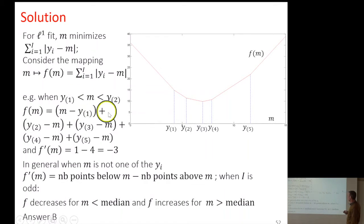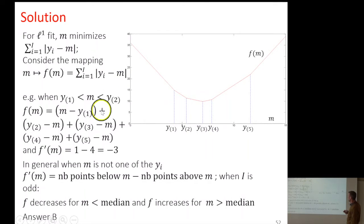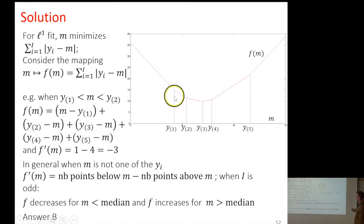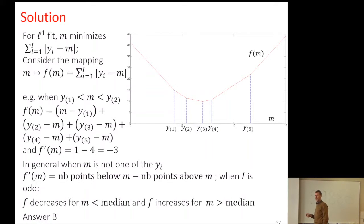When M is between the first and second point, the only question is the sign of each term. M minus Y1 is positive, and all the others have a negative sign. So between two values of Y, assuming all values are distinct, this is a linear function. The expression changes only when we cross a value of Y, making it a piecewise linear function.